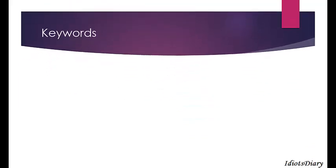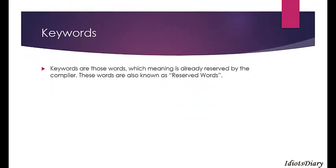Next, we will discuss about keywords. Just as in English there are words like 'under', 'over', 'between' that have fixed meanings, similarly in C there are some words whose meaning is already fixed. These words are known as keywords or reserved words. There are 32 keywords in the ANSI C specification, which are listed below.